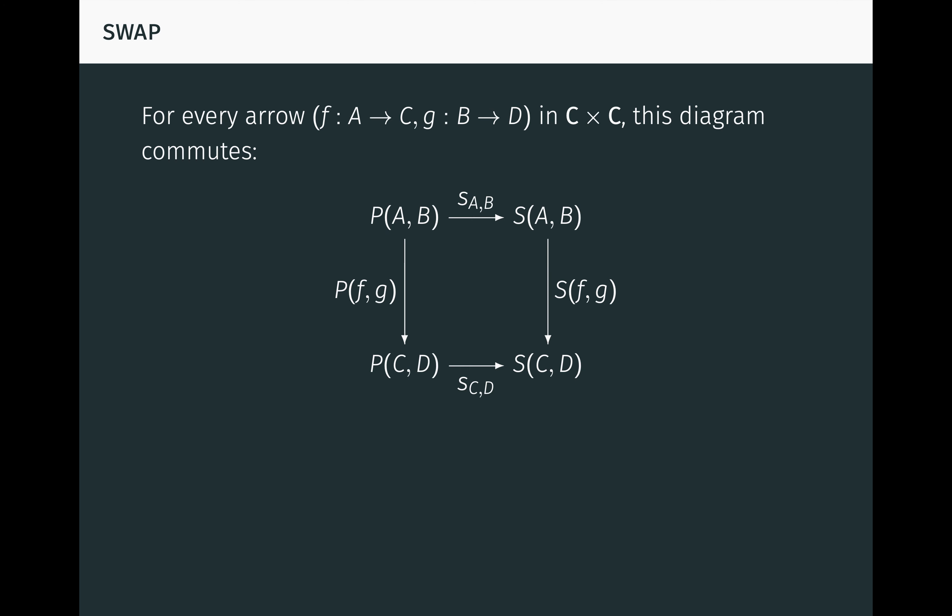Now from what we've seen, we know that for every arrow f in the product category C times C, this diagram commutes. This is the same diagram we saw before, just using the functors P and S to describe the products involved.